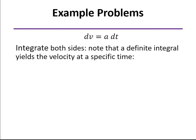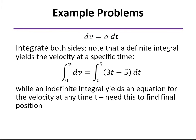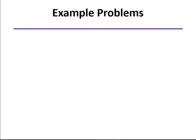When we integrate it, we can either do it as a definite integral, in which case we'll have a velocity at this specific time will be our answer. But a lot of times we'll need an equation for the velocity as a function of time, in which case we want to do an indefinite integral instead. And we're going to need that. So we'll do it that way.